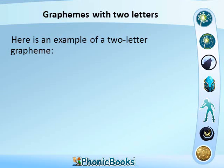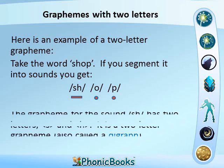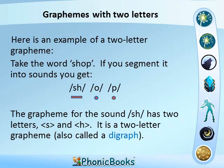Graphemes with two letters. Here is an example of a two-letter grapheme. Take the word 'shop'. If you segment it into sounds you get SH, O, P. The grapheme for the sound SH has two letters: S and H. It is a two-letter grapheme, also called a digraph.